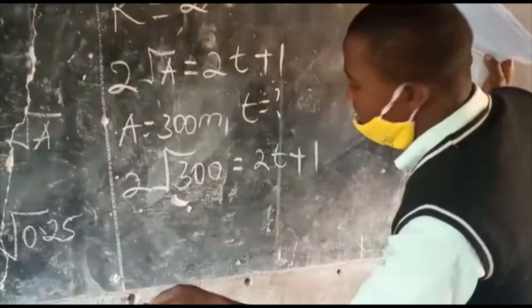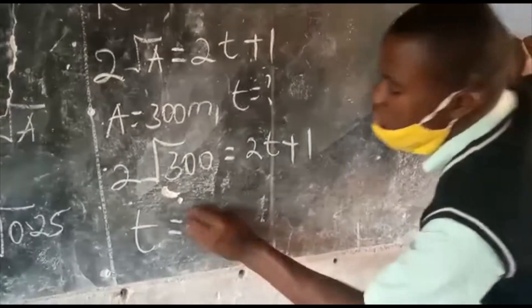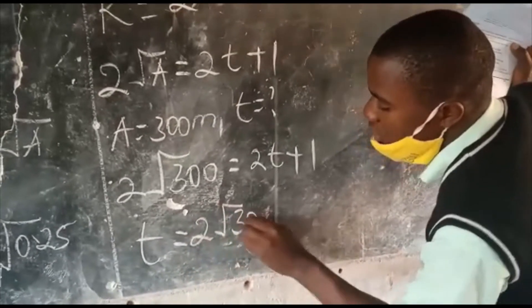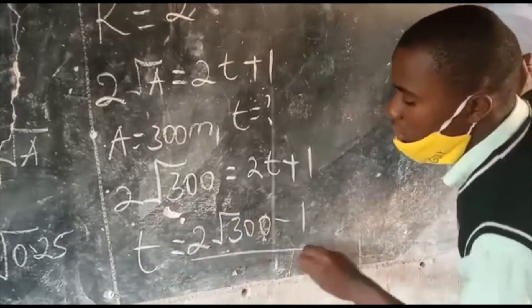If I make T the subject, so T equals to 2 root of 300, minus 1, all over 2.